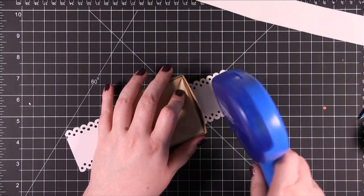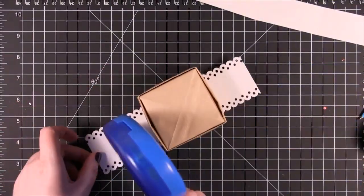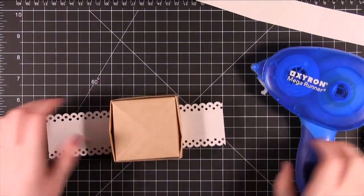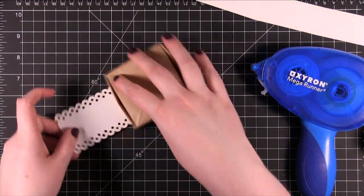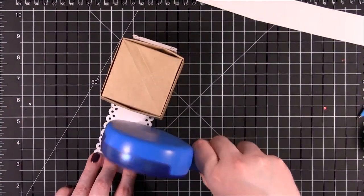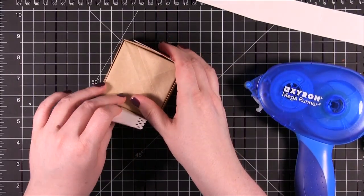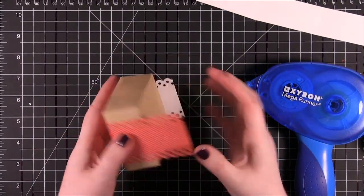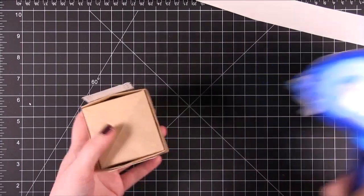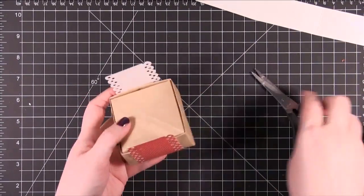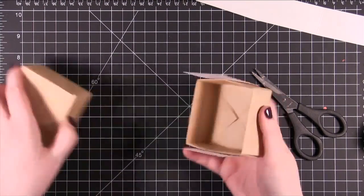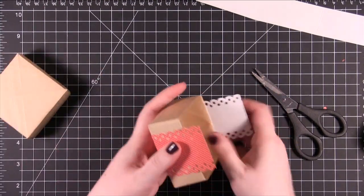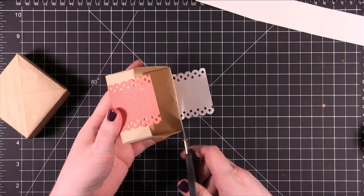I'm also going to add some adhesive on these edges. Just fold that up. Oh, adhesive on this side. And I'm just going to trim that clean right there. Take the bottom one out. And I'm just going to trim across right there.